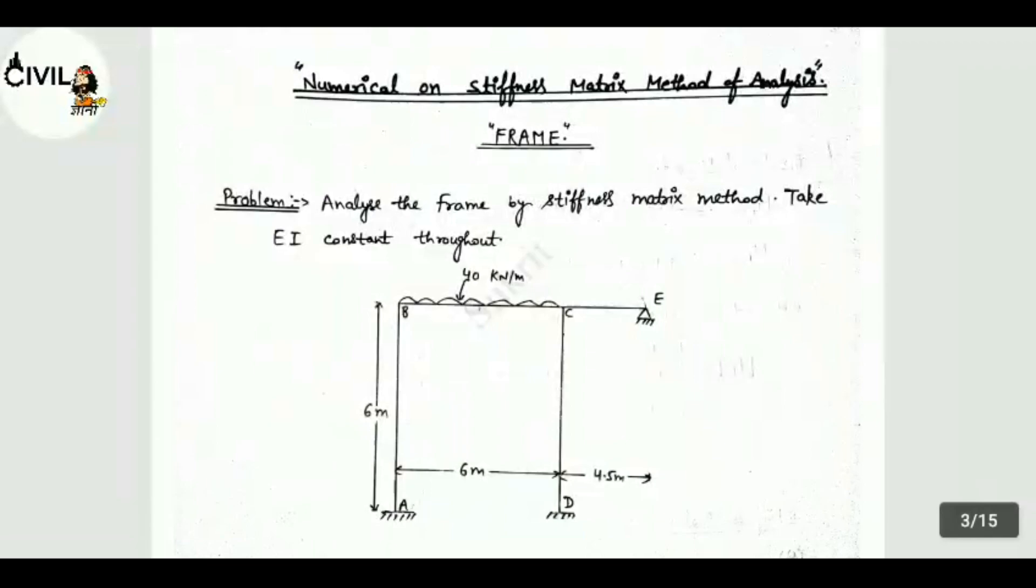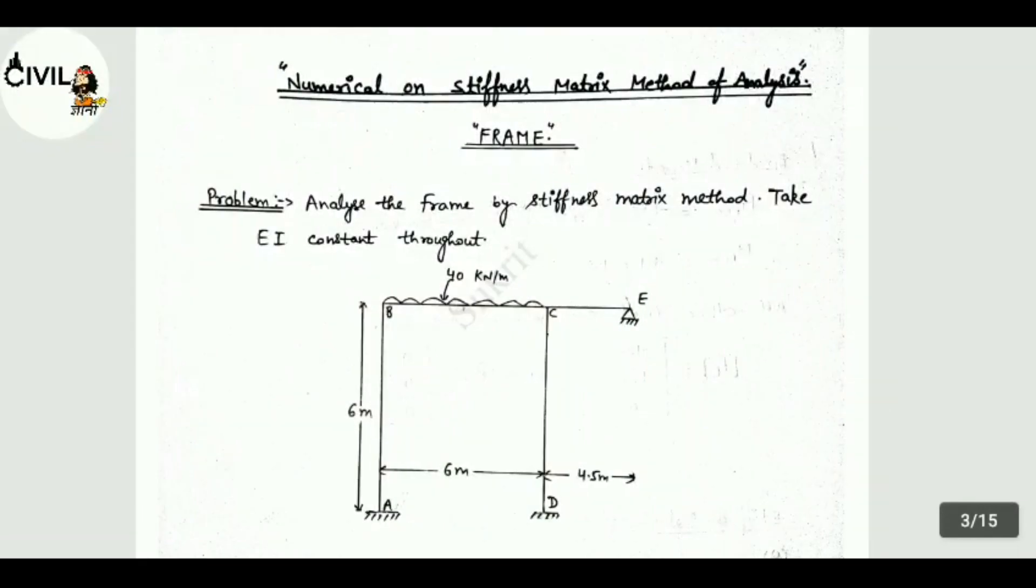BC has UDL of 40 kN per meter. AB distance is 6 meter, AD distance is 6 meter, and CE distance is 4.5 meter. Let's start.